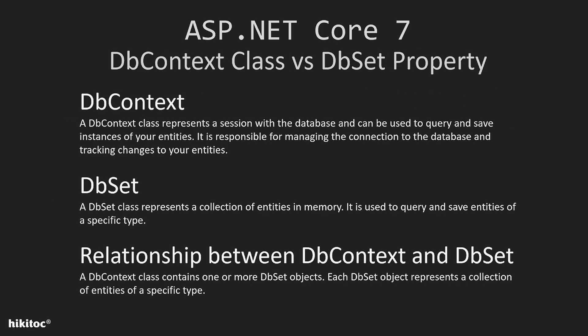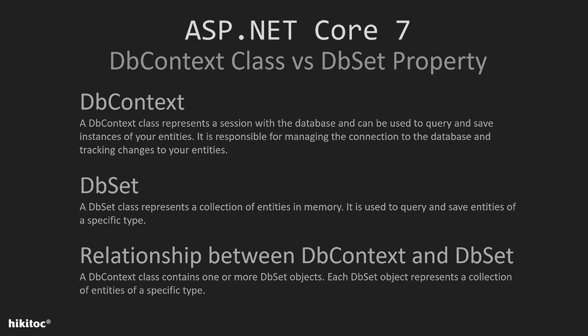Before we install entity framework, let me quickly explain the DbContext and DbSet classes. A DbContext class represents a session with the database, used to query and save instances of your entities, and is responsible for managing the connection and tracking changes. A DbSet class represents a collection of entities used to query and save entities of a specific type. A DbContext class contains one or more DbSet objects, each representing a collection of entities of a specific type.